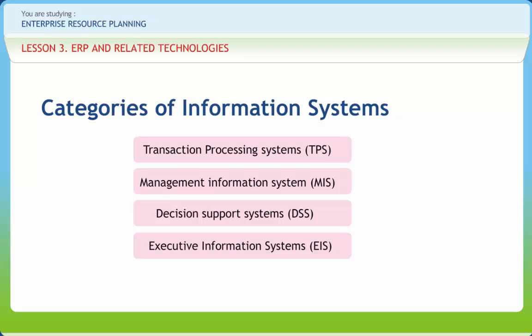An executive information system is a computer-based system intended to facilitate and support the information and decision making needs of senior executives by providing easy access to both internal and external information relevant to meeting the strategic goals of the business. The primary goal of expert systems research is to make expertise available to decision makers and technicians who need answers quickly. Expert systems are man-machine systems with specialized problem-solving expertise, consisting of knowledge about a particular domain, understanding of problems within that domain, and skills at solving some of these problems.